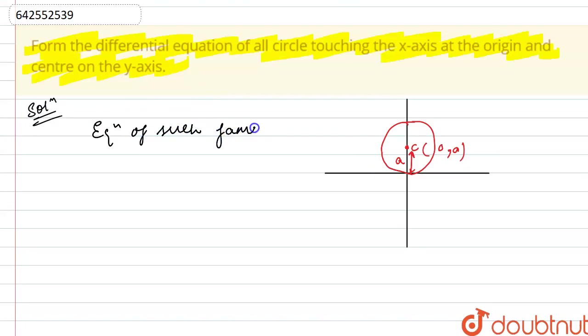Equation of such family of circles. Using the general equation of circle, x minus 0 whole square plus y minus a whole square equals radius square. And radius here equals a only.